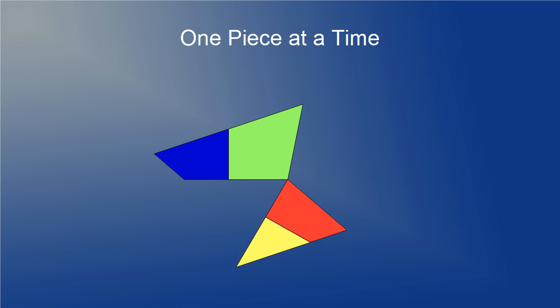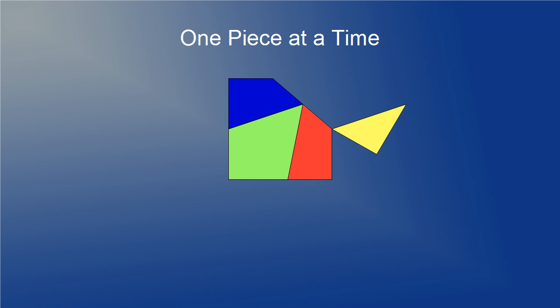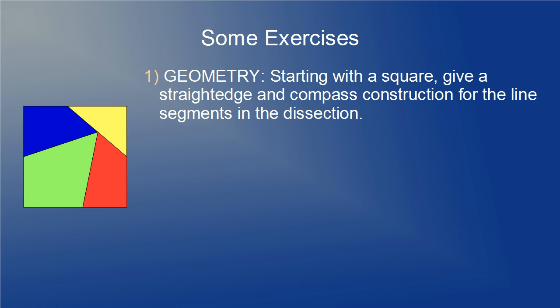I'm going to focus on the square for these problems because it's a bit easier to work with. It lines up with the grid on the coordinate plane when you place it at the origin. The first problem is to start with the square and give Euclidean straightedge and compass construction for this diagram.